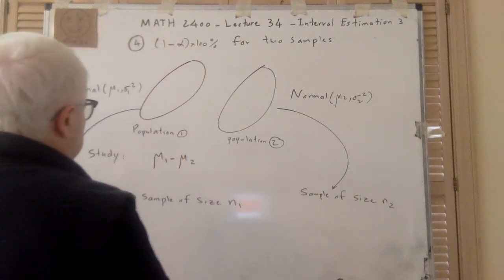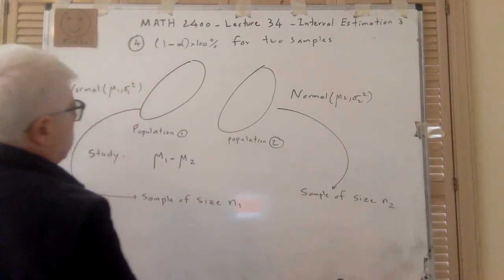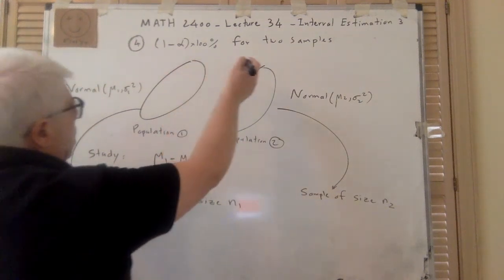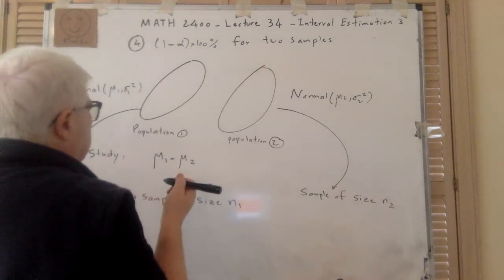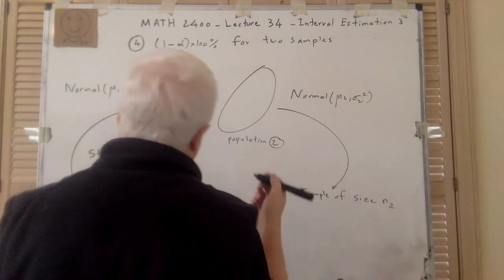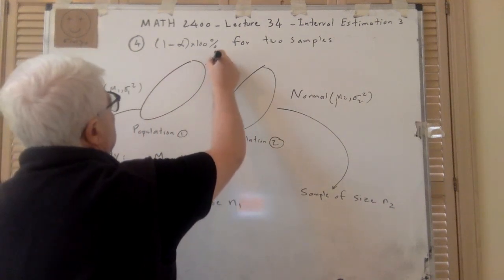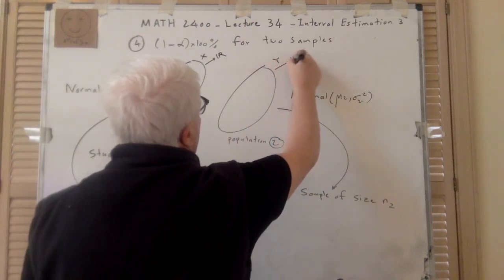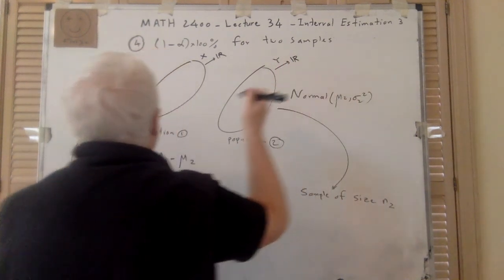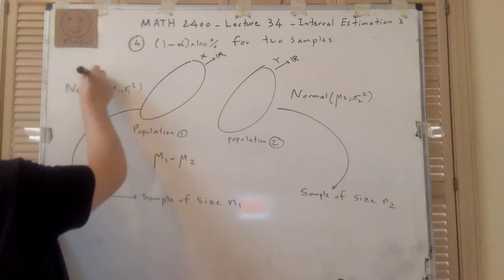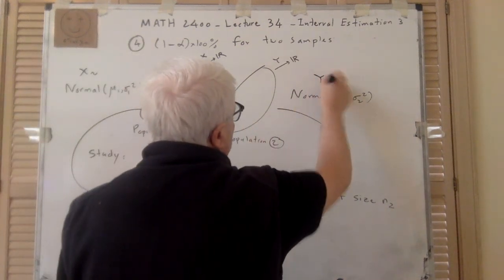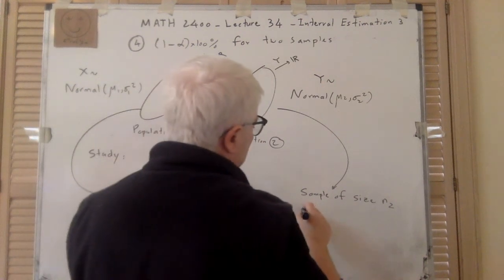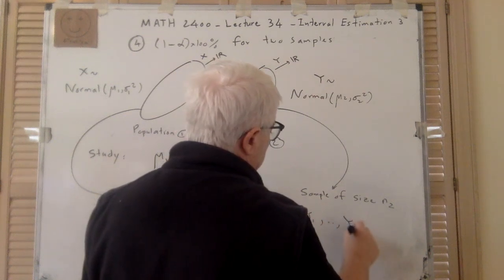What we are doing is: we have a random variable X from population one and a random variable Y from population two — both representing price. Here I have x1 up to x_{n1}, and here I have y1 up to y_{n2}. And μ1 minus μ2 will relate to x_i minus y_i for each i, and so on.